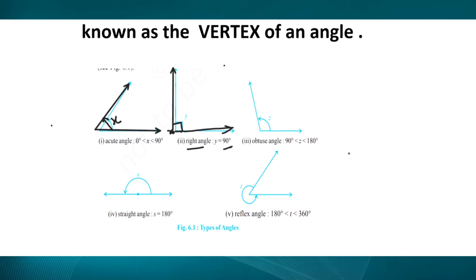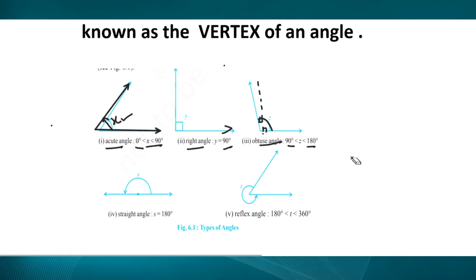इस angle का measure जो है that is less than 90 degree, पर 0 degree से greater है, इसको बोलते हैं acute angle। Third type of angle is obtuse angle - obtuse angle जो है, 90 degree से बड़ा होना चाहिए but 180 degree से छोटा होना चाहिए, that is greater than 90 degree। यहाँ measurement 90 degree से थोड़ा ज्यादा दिख रहा है, so this is known as obtuse angle।